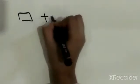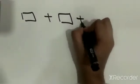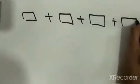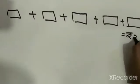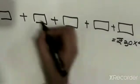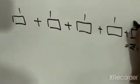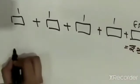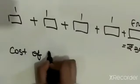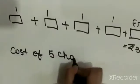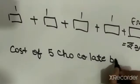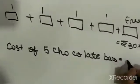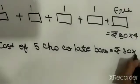Let's begin. The cost of 1 chocolate bar plus 1 chocolate bar plus 1 chocolate bar plus 1 free-of-cost chocolate bar equals Rs. 30 into 4. So 1 plus 1 plus 1 plus 1, and this one is free. Now let's begin the statement: cost of 5 chocolate bars. Cost of 1 chocolate bar equals Rs. 30 into 4.